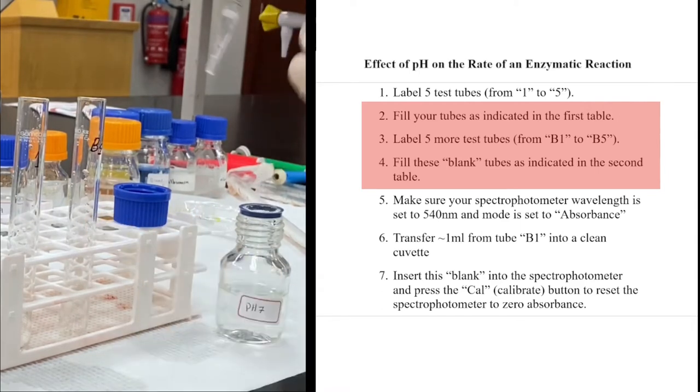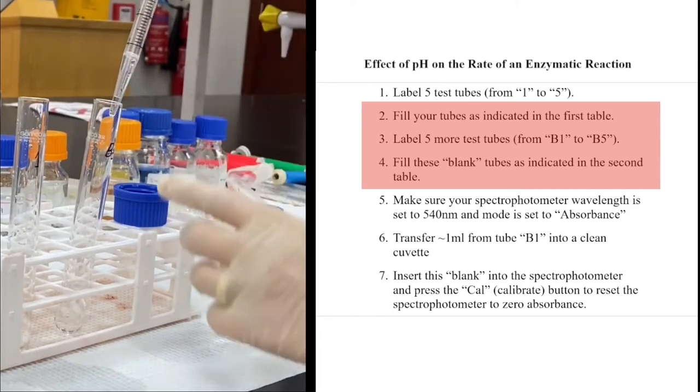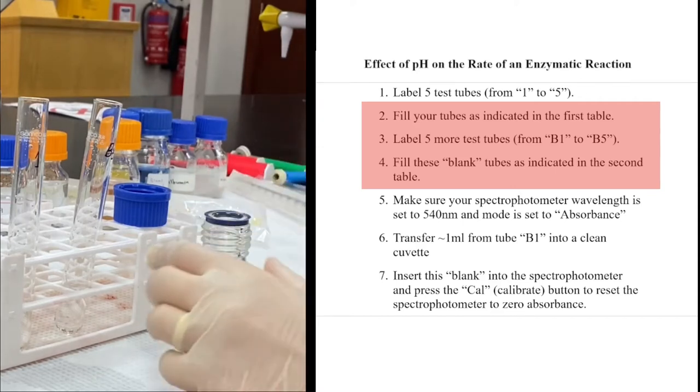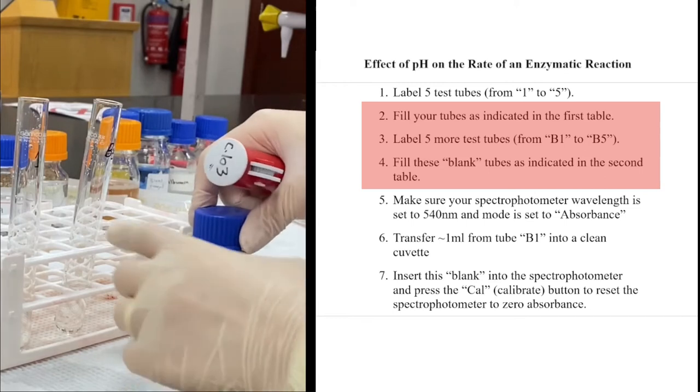Instead of distilled water in this experiment, I am using buffer solutions: 5.5 ml in the blank and 5 ml in the experimental test tube. Now, on each test tube, we add 0.5 ml of enzyme to both test tubes.